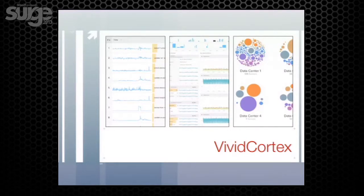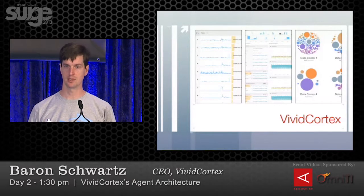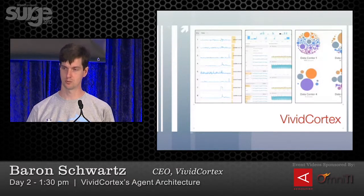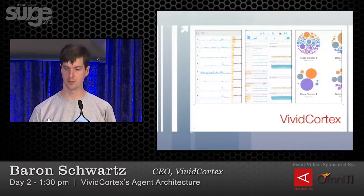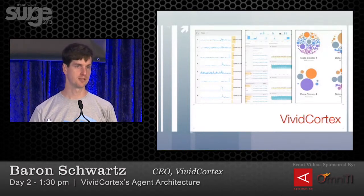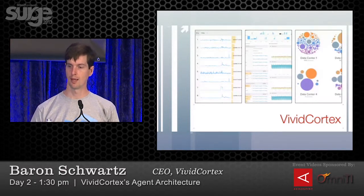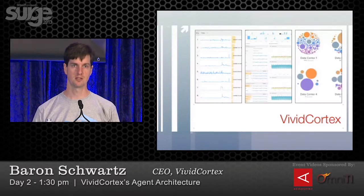Here are a couple of screenshots of what we're doing at Vivid Cortex. We're building database performance management — what AppDynamics and New Relic and AppNet and all of these companies do for the application code, measuring where the work is done, we're doing that for the database, starting with MySQL. There's a lot of data to process and visualization challenges, and we're using an agent-based architecture, sending all of our data up through APIs into our software as a service, with everything in a web interface.